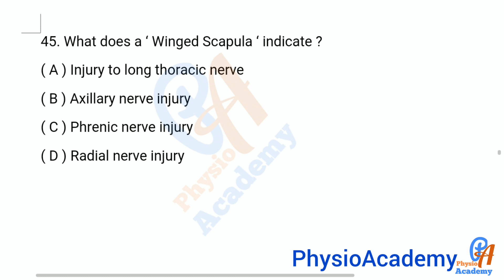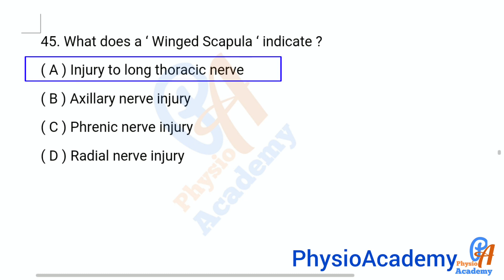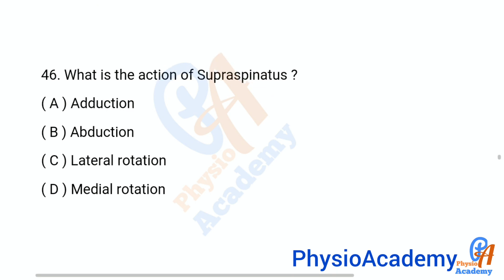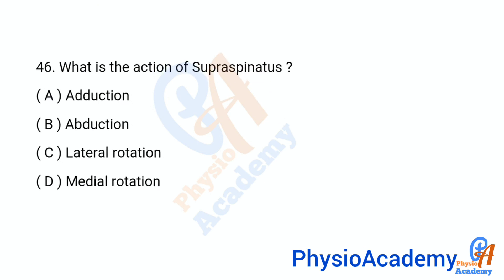Question number 45: What does winged scapula indicate? Option A: injury to long thoracic nerve, option B: axillary nerve injury, option C: phrenic nerve injury, option D: radial nerve injury. The correct answer is option A: injury to long thoracic nerve.